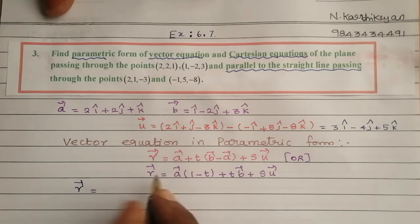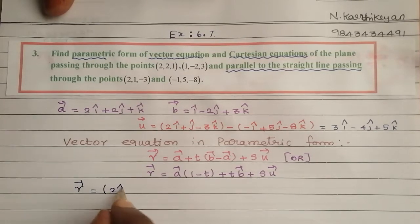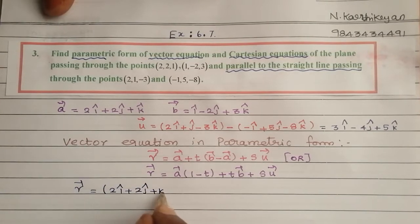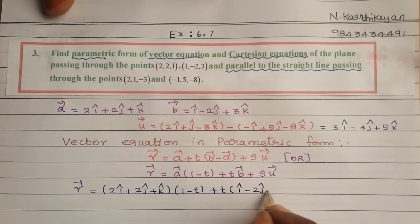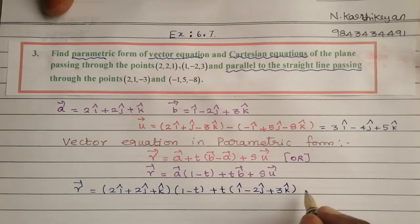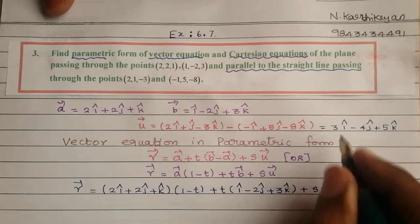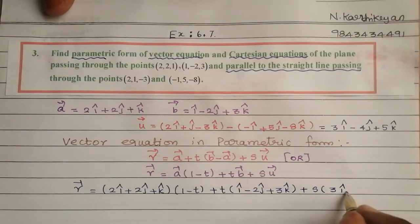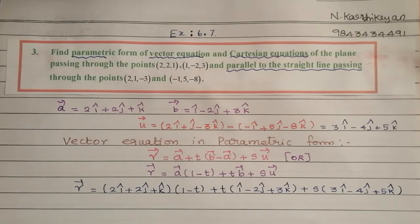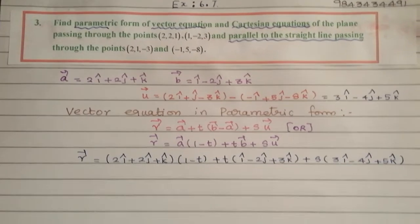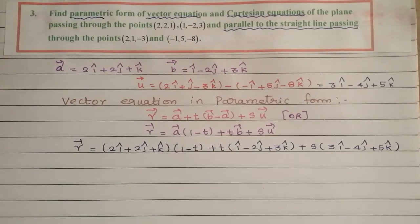So r vector equals (2i-cap + 2j-cap + k-cap) multiplied by (1 minus t), plus t into (i-cap minus 2j-cap plus 3k-cap), plus s into (3i-cap minus 4j-cap plus 5k-cap). This is the vector equation in parametric form.